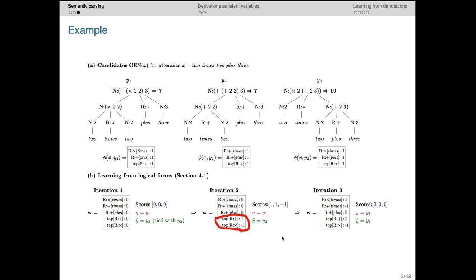This causes a separation in the new weight vector for the features that distinguish y1 and y3. Now we do a second iteration and here y2 is chosen.